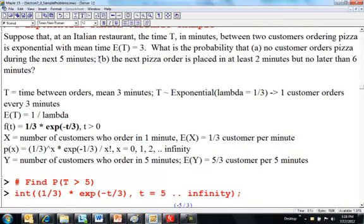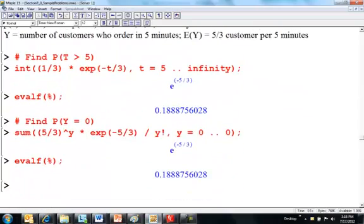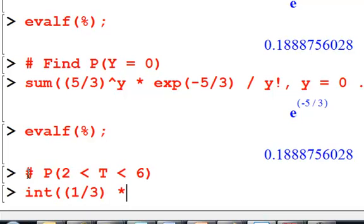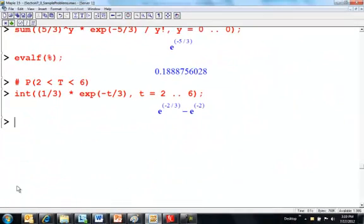Part B, what's the probability the next pizza order is placed in at least two minutes, but no later than six minutes? I think this is easiest as exponential. Probability of the time is between two and six minutes. So, going back up here, integrate f of t, one-third times exp negative t divided by three, from t equals two to six. What's the probability the time between the next order is between two and six minutes? About 38%.